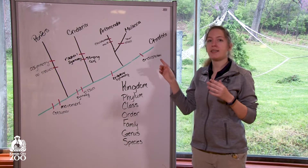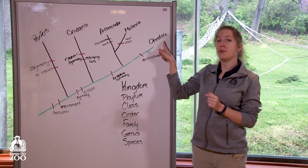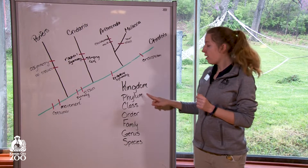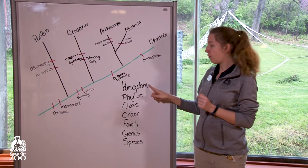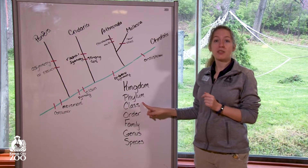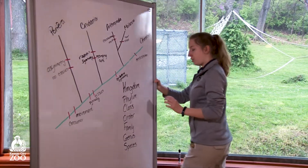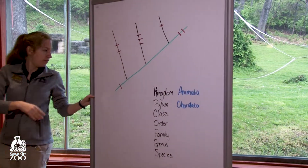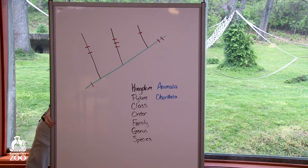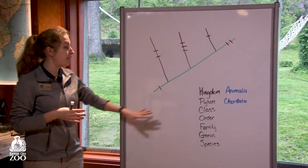An endoskeleton is a skeleton that is on the inside of the body. So what we're going to do is actually break down Chordata. Our kingdom is Animalia, our phylum is Chordata. If we move down one more level of classification, we're going to talk about classes. We're going to flip our board here and show our new phylogenetic tree.